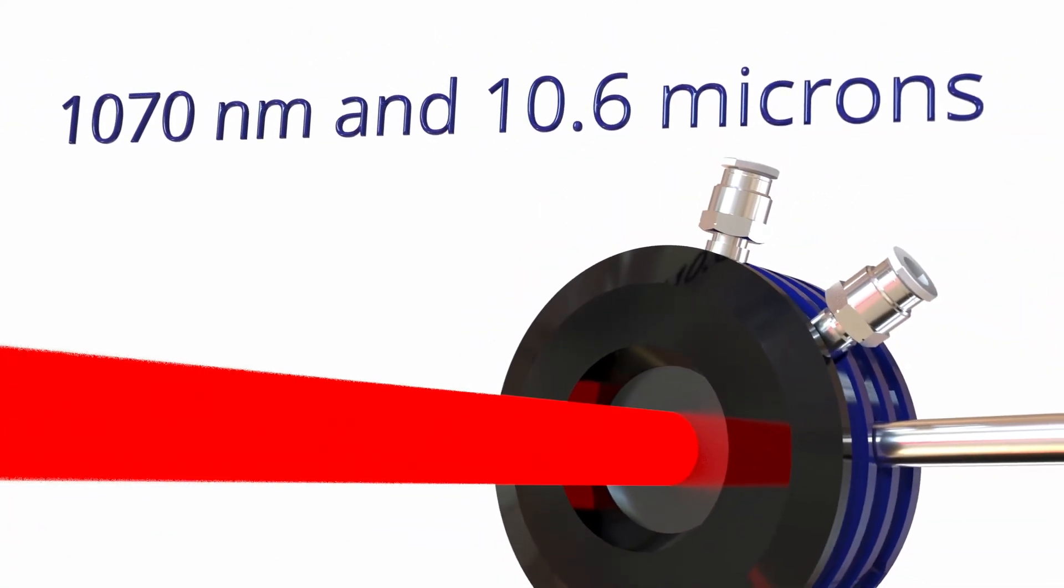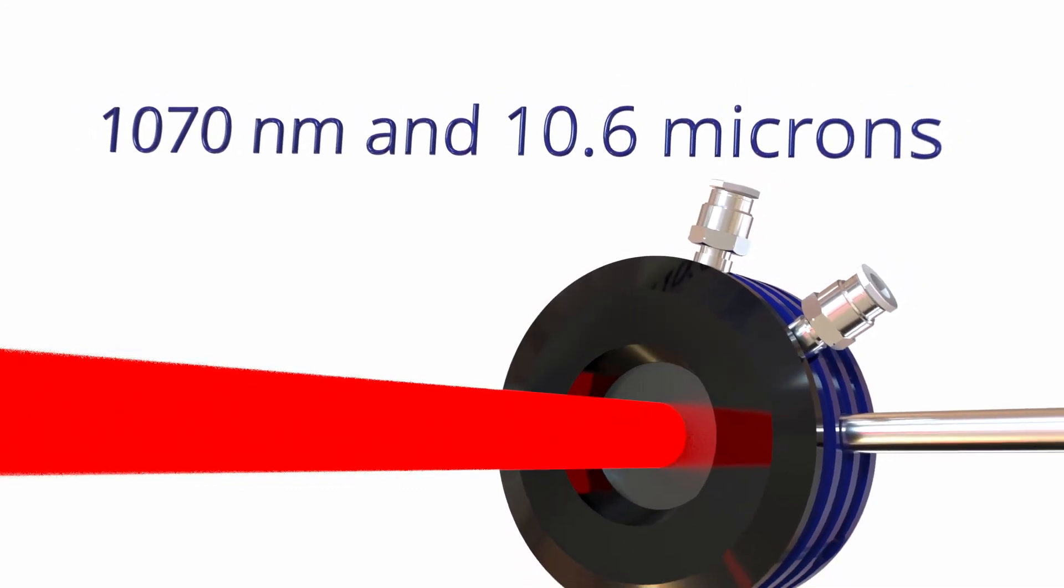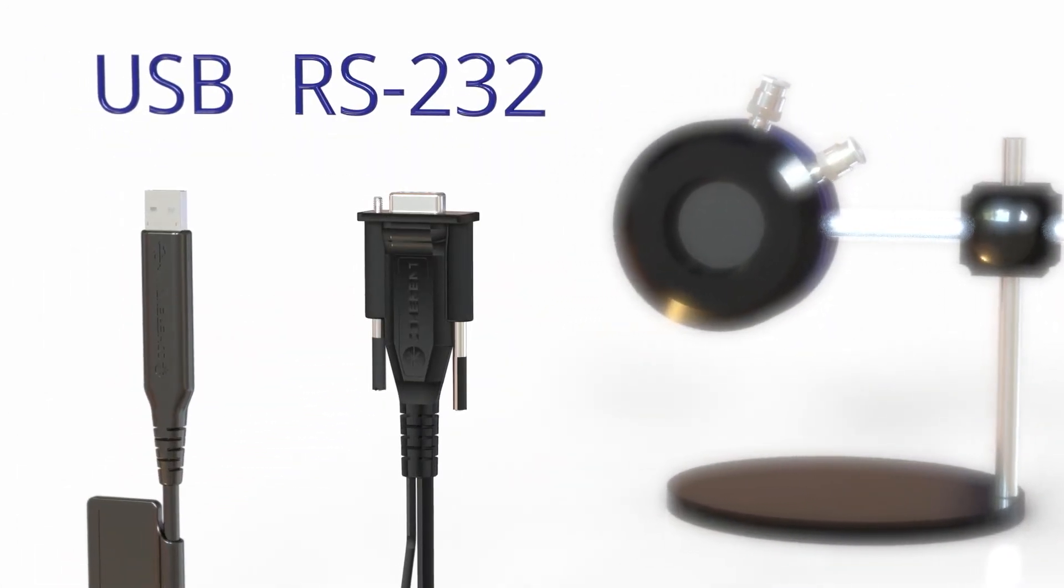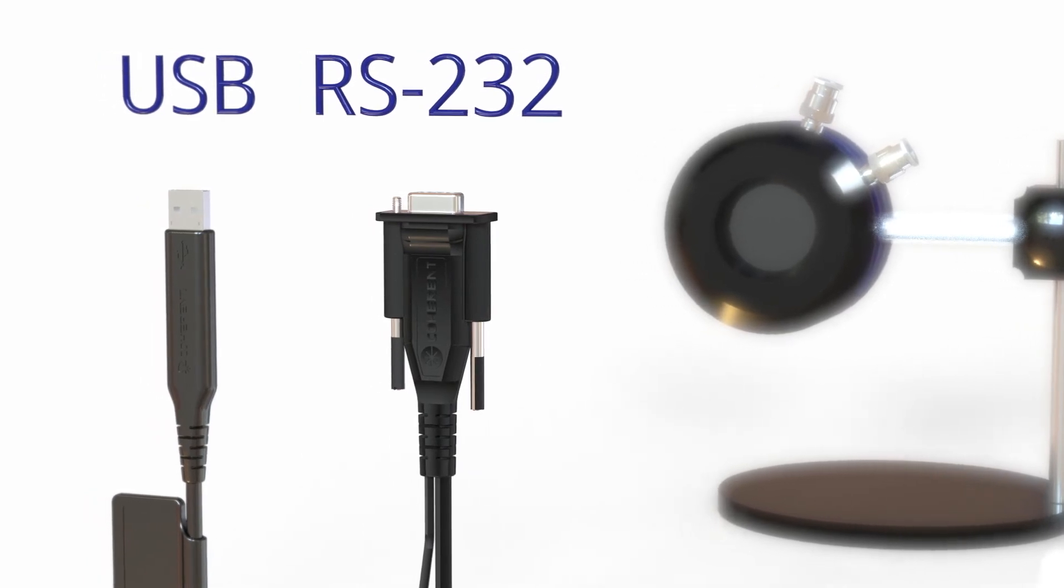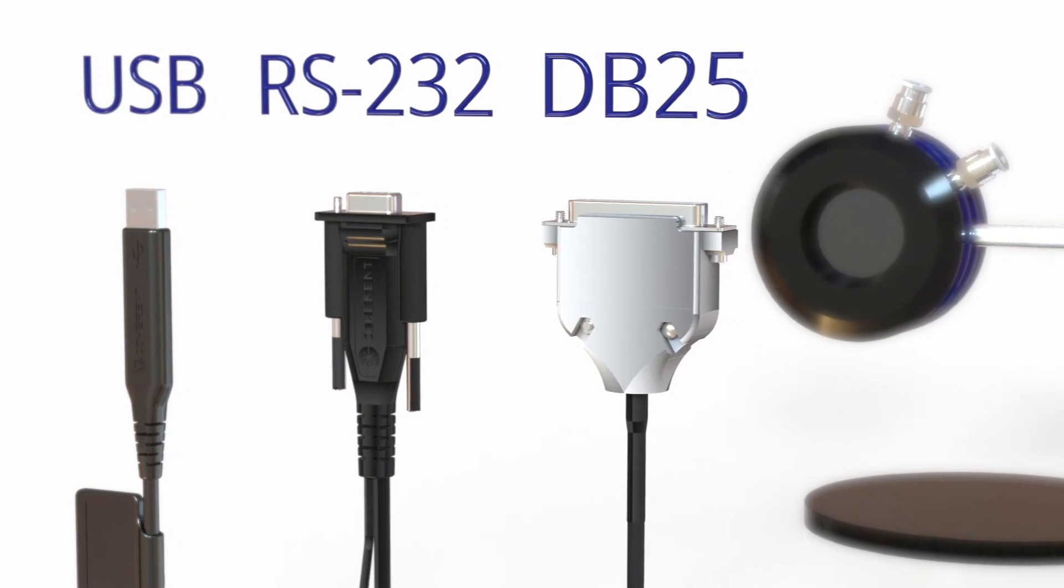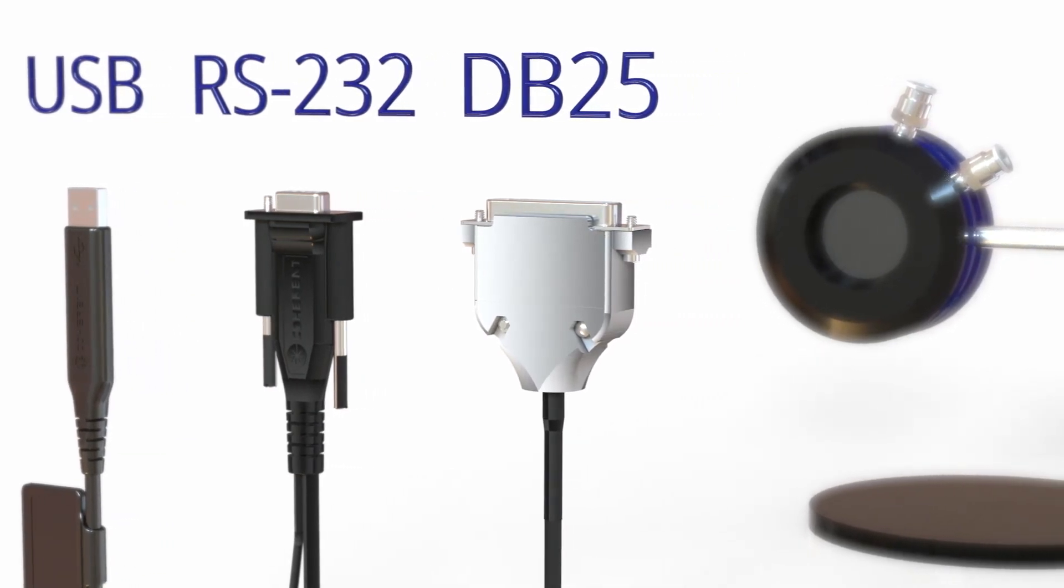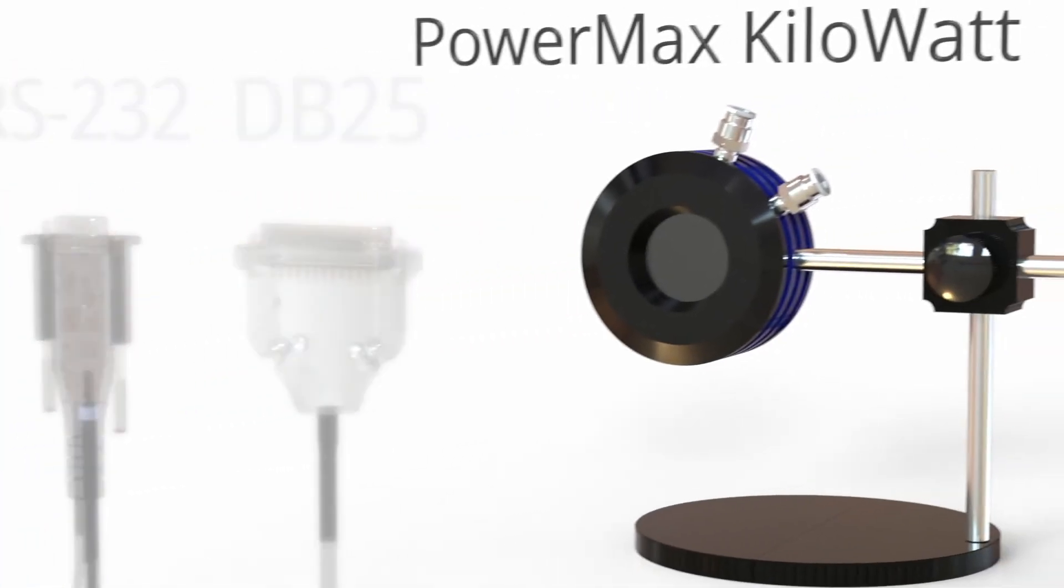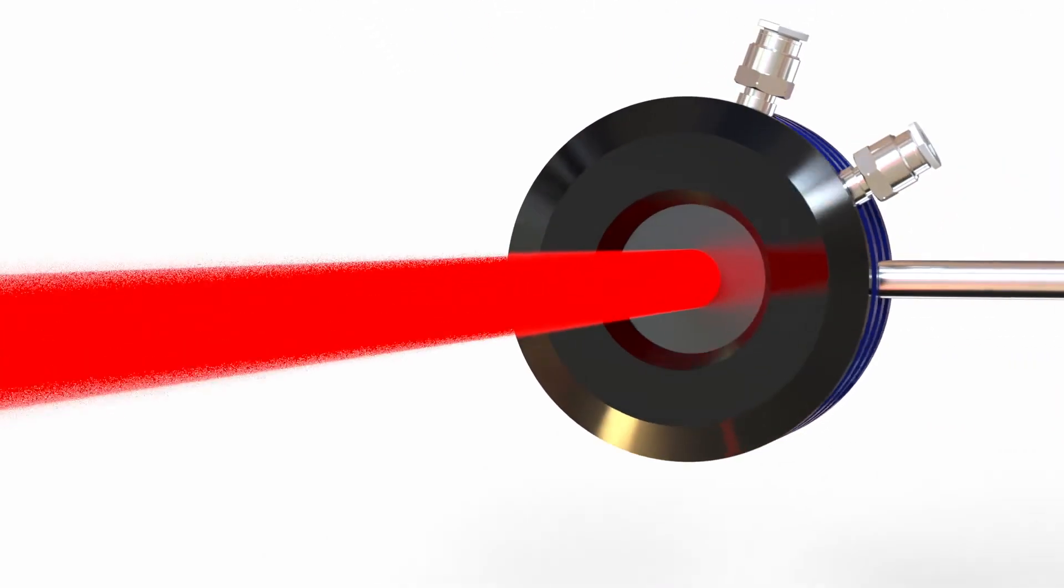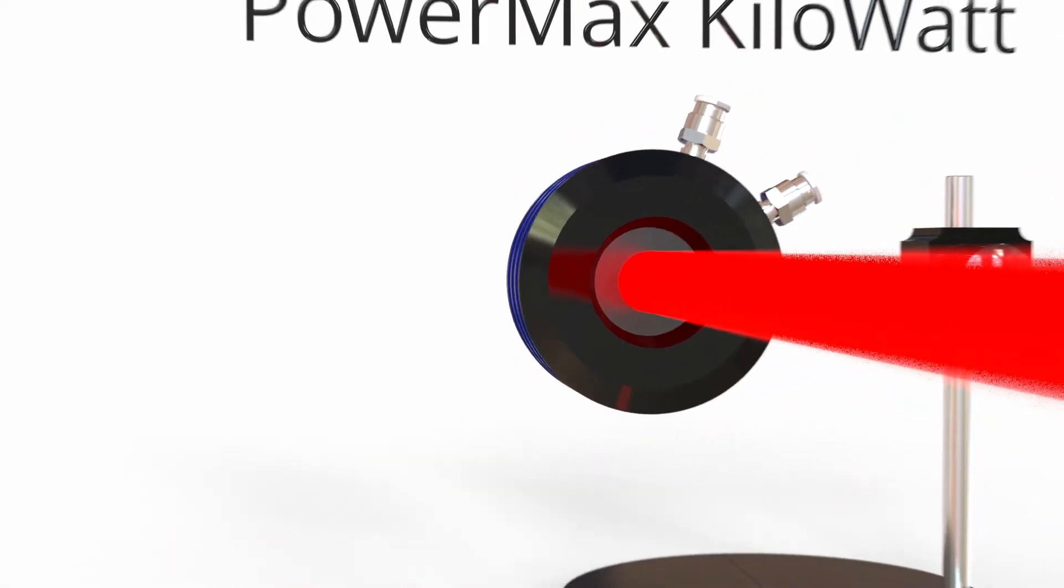All models are calibrated at two wavelengths and at two power levels. Choose from USB and RS-232 configurations for direct connection to a PC or industrial controller and DB25 for use with our standalone meters. PowerMax kilowatt sensors. High power sensors for high power applications. From Coherent.